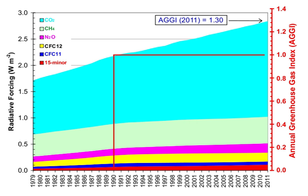If output of a gas into the atmosphere ceased, then after time τ its concentration would decrease by about 63%. The atmospheric lifetime of a species therefore measures the time required to restore equilibrium following a sudden increase or decrease in its concentration. Individual atoms or molecules may be lost or deposited to sinks such as the soil, the oceans and other waters, or vegetation and other biological systems, reducing the excess to background concentrations.